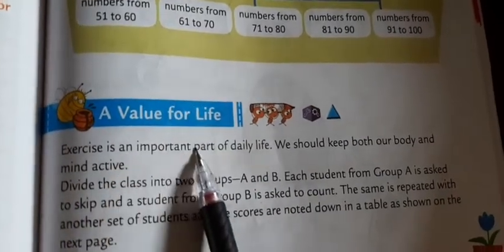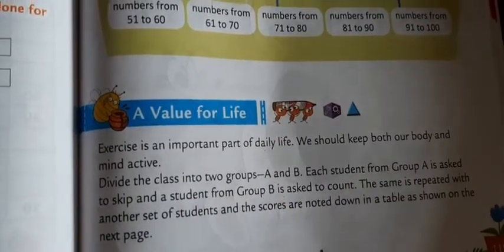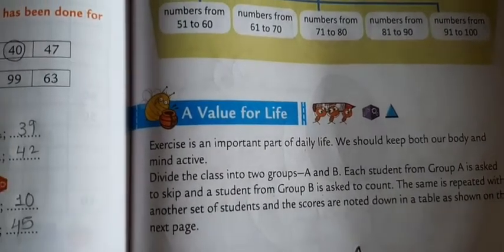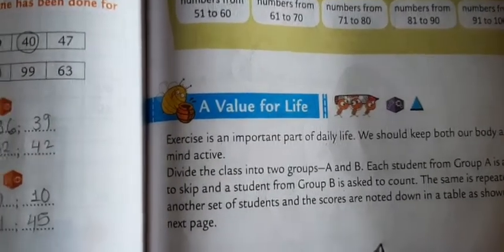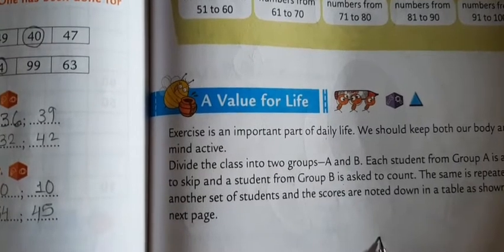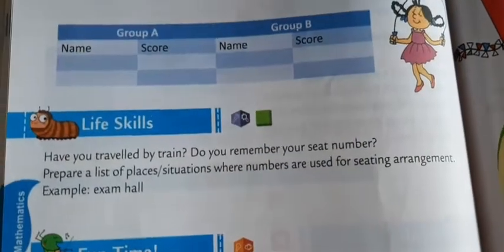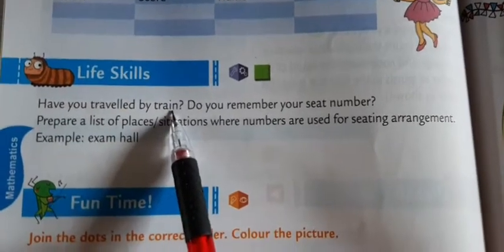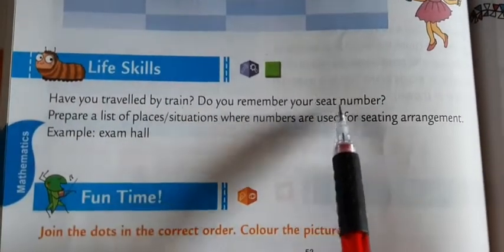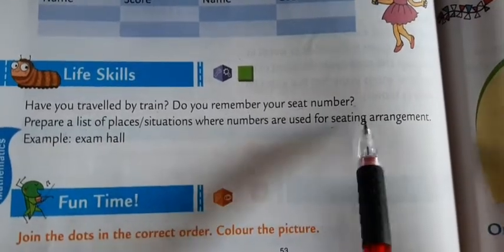A value for life: exercise is an important part of daily life. We should keep both our body and mind active. Divide the class into two groups A and B. Each student in group A is asked to skip and a student from group B is asked to count. The scores are noted down in a table. Life skill: have you traveled by train? Do you remember your seat number? Prepare a list of places or situations where numbers are used for seating arrangement.